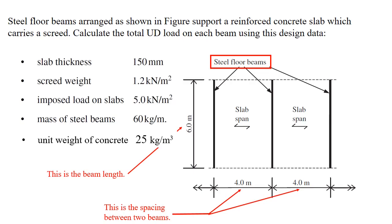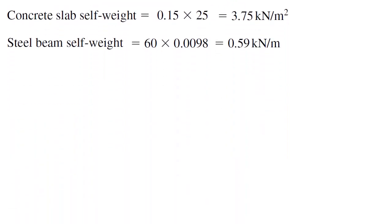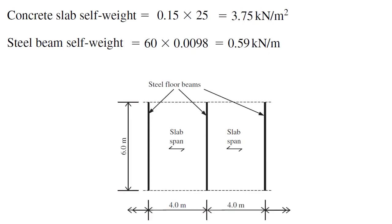Let's solve this problem step by step. Concrete slab self-weight is equal to thickness of the slab times unit weight of concrete. Steel beam self-weight is equal to mass of steel beam times the acceleration due to gravity of earth.